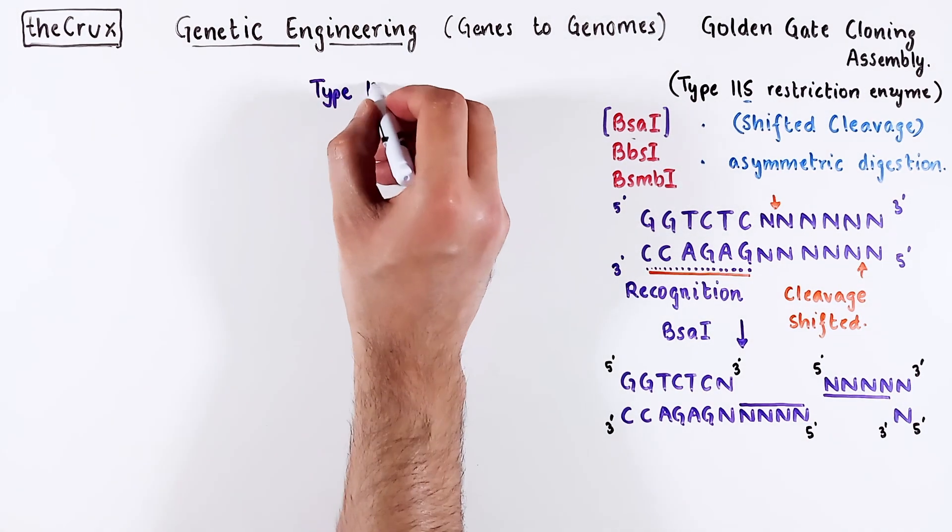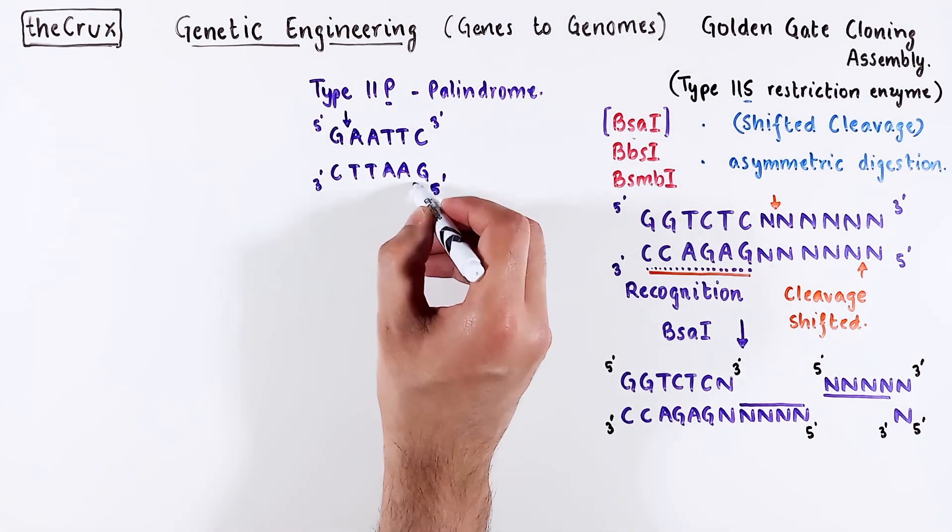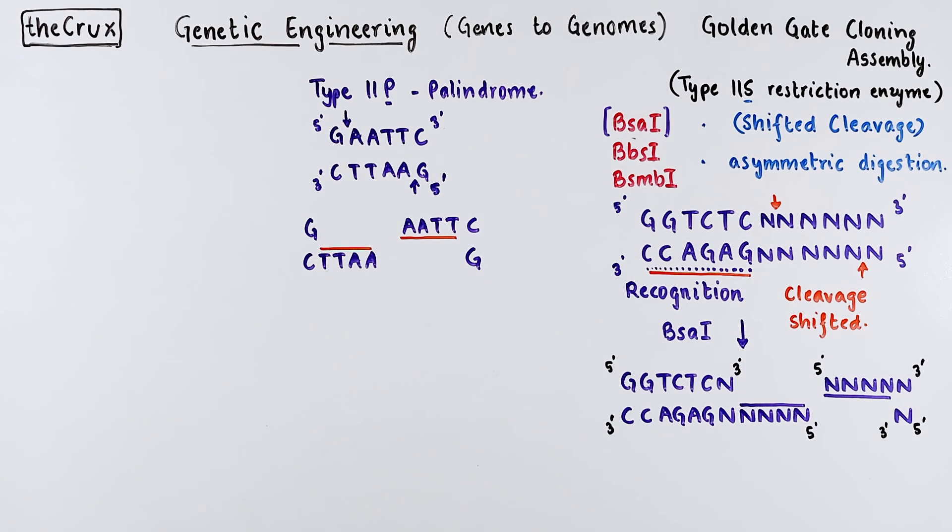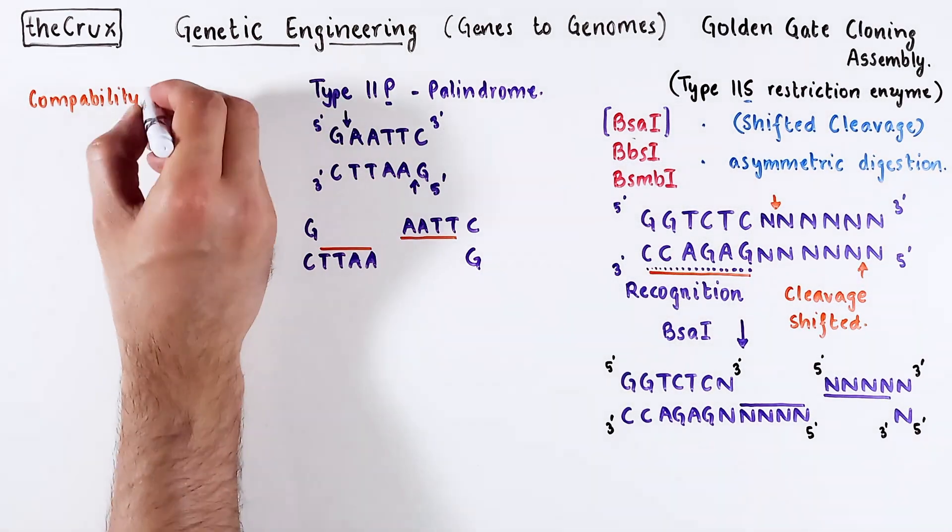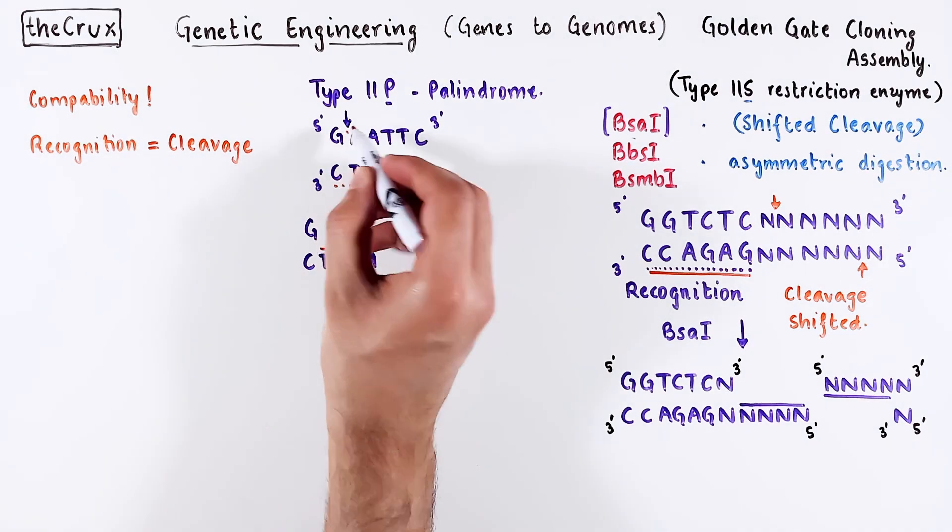This is in contrast to Type 2P enzymes. For instance, here is EcoR1, which recognizes and cuts at the same location. This ensures compatibility across all EcoR1 sites since recognition and cleavage are sequence specific.